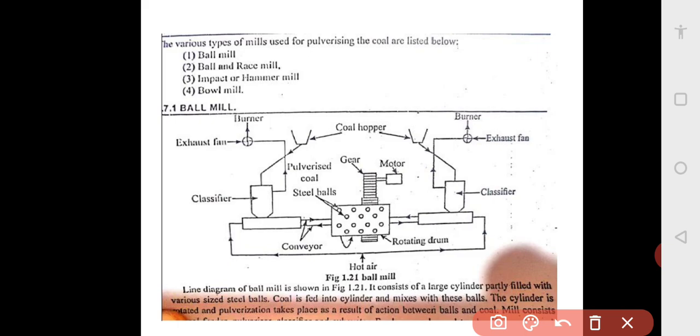The oversize particles are thrown out of the air stream in the classifier, and the fine material is passed to the burner through the exhaust fan. The output of the mill is controlled by dampers located at the exhaust fan inlet duct. These dampers vary the flow of air through the mill and thereby control the rate of fuel removed.